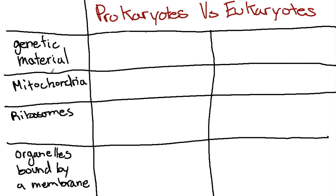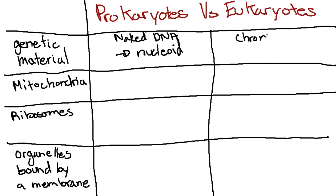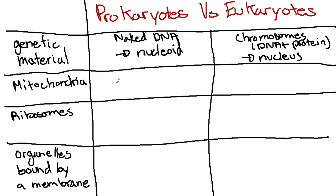If we go back to our table: prokaryotic cells have naked DNA in a region called the nucleoid, and eukaryotic cells have chromosomes, which are made up of DNA and protein, and these are found in the nucleus. Mitochondria: prokaryotes have no mitochondria, whereas eukaryotes do have mitochondria. Mitochondria are the organelles responsible for aerobic respiration.